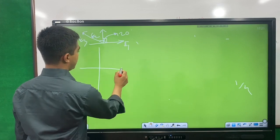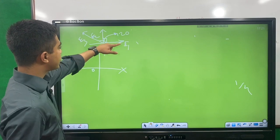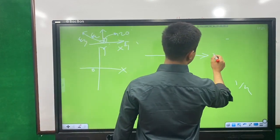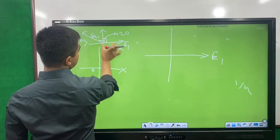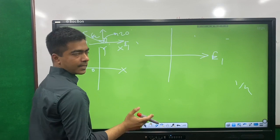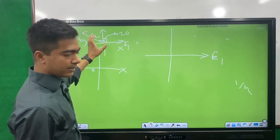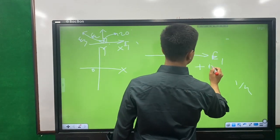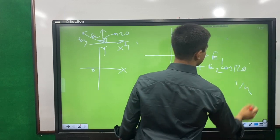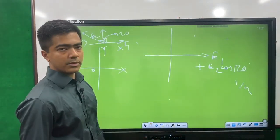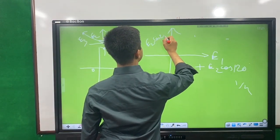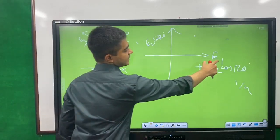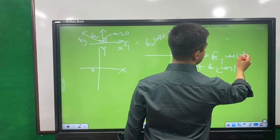We decompose vectors along the x-axis and y-axis. E1 is along the x-axis directly. E2 is at 120 degrees. So the x-component of E2 is E2 cos 120°, and the y-component of E2 is E2 sin 120°. The x-axis component of E1 is E1 cos 0° which equals E1.